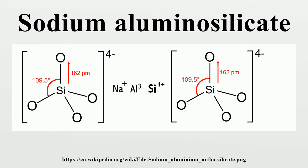Minerals sometimes called sodium alumina silicate are naturally occurring minerals that are sometimes given the chemical name sodium alumina silicate. These include albite and jadeite.